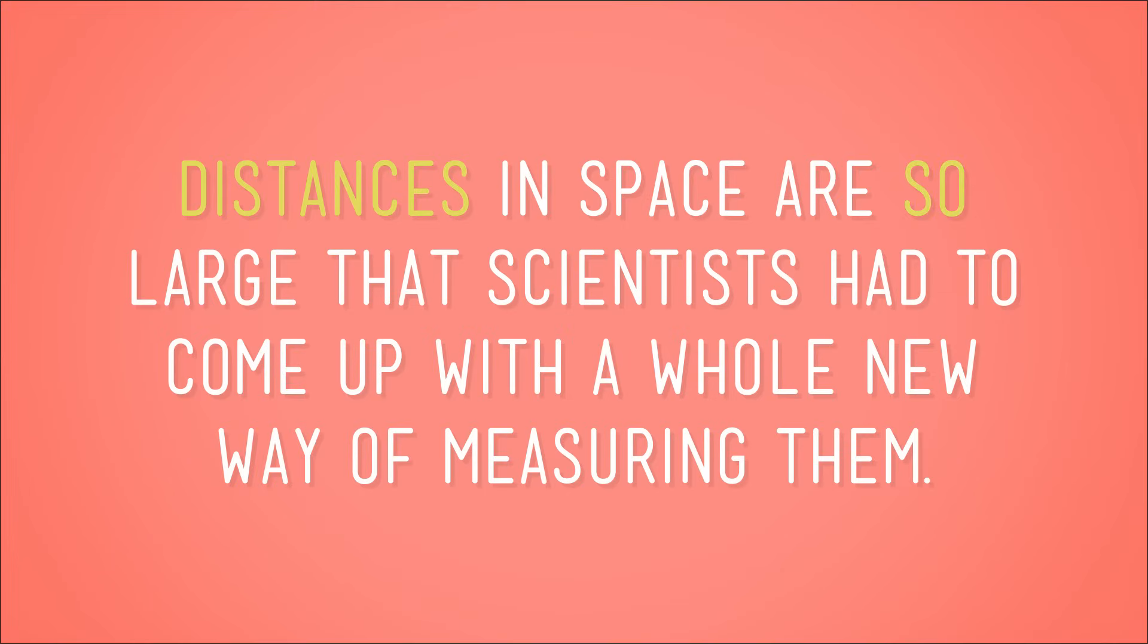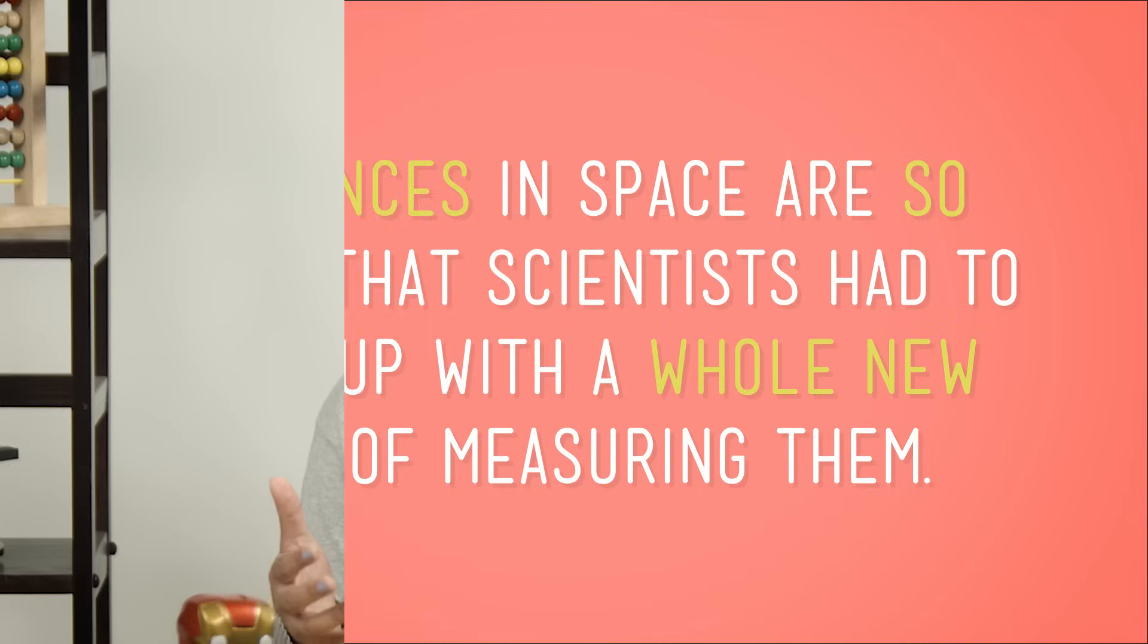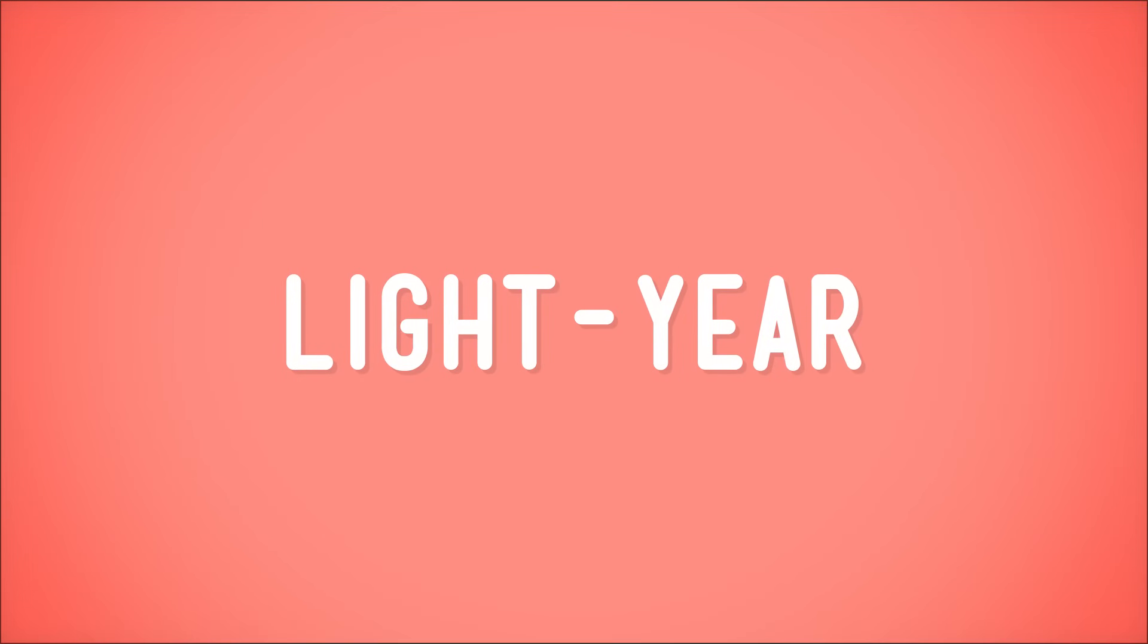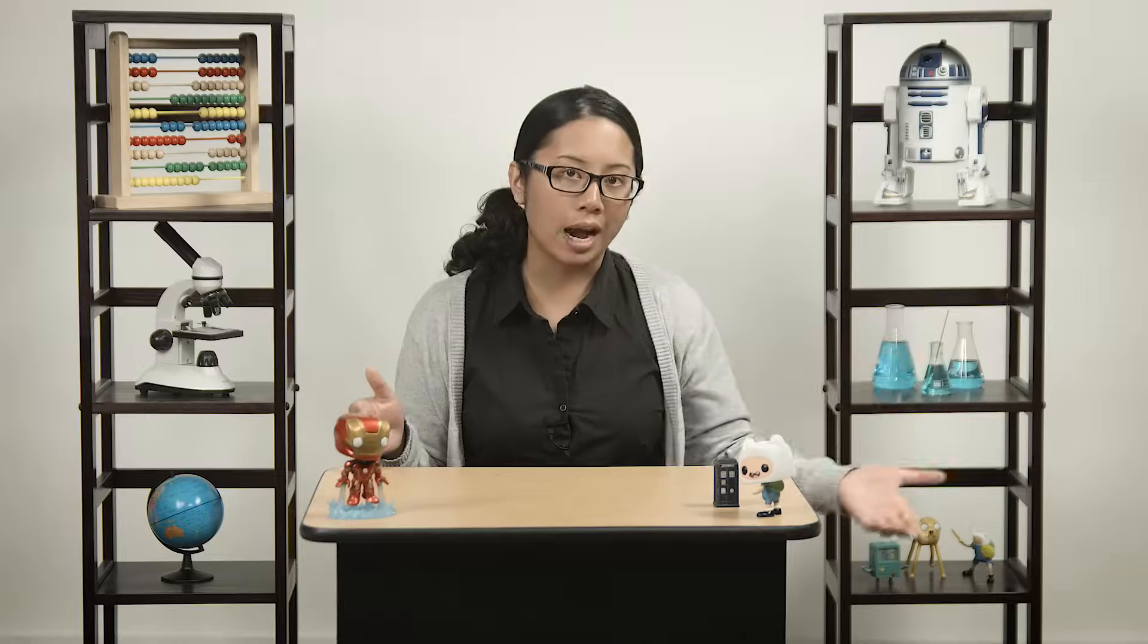Distances in space are so large that scientists had to come up with a whole new way of measuring them. You can't talk about space using miles or kilometers. The numbers get so big that they just sound like nonsense. That's where a light year comes in. It sounds like a measure of time because it has the word 'year' in it, but it's really a measure of distance.